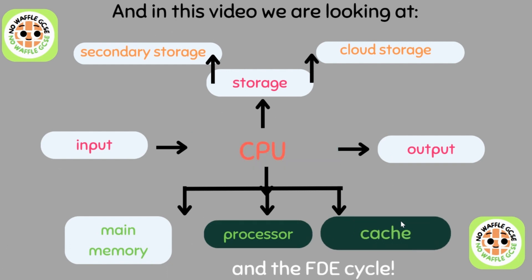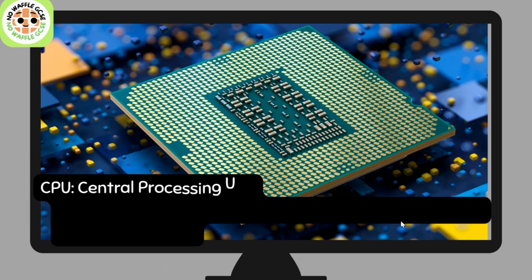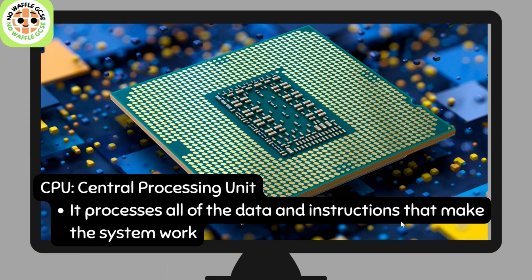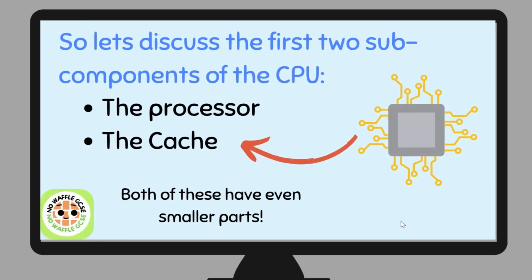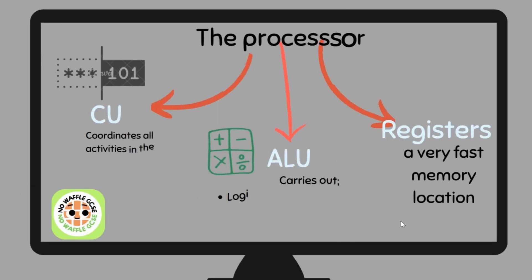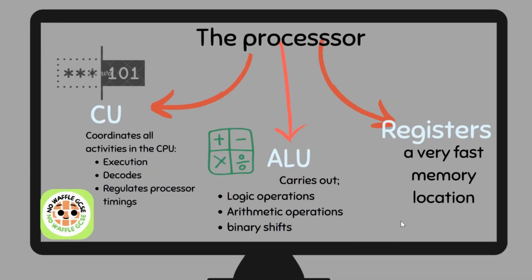The CPU stands for the Central Processing Unit — it processes all of the data and instructions that make a system work. The first two sub-components of the CPU are the processor and the cache. The processor is made up of three things: the CU, which is the Control Unit; the ALU, which is the Arithmetic Logic Unit; and registers.